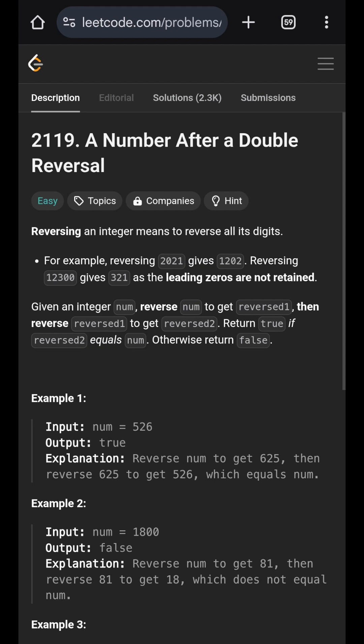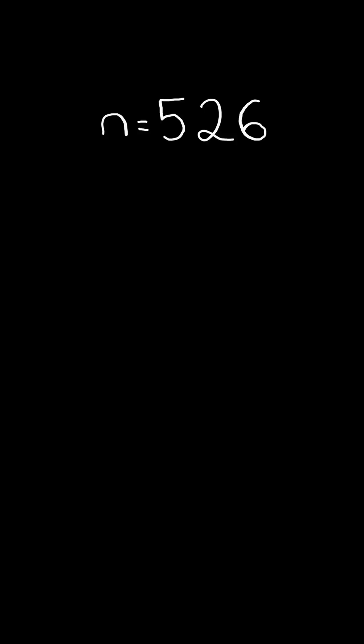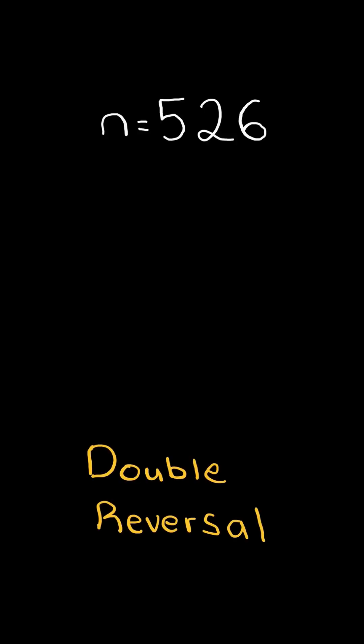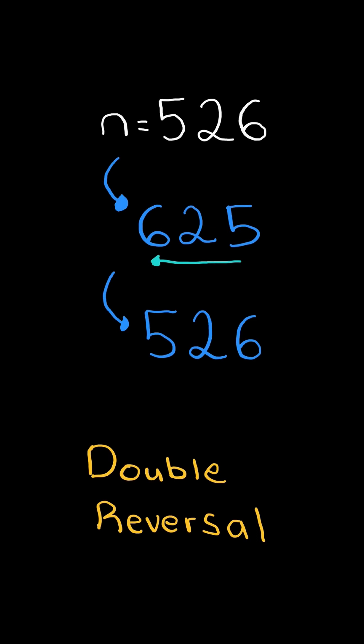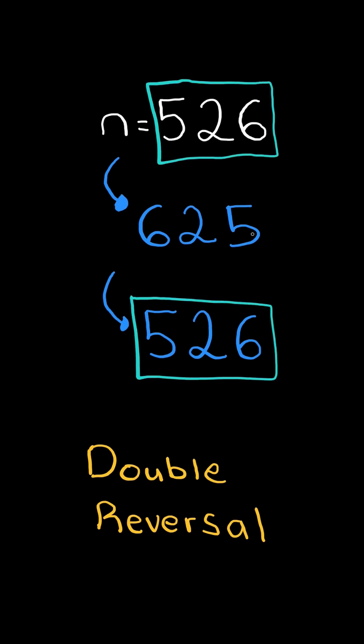A number after a double reversal. Given an integer n, perform a double reversal: reverse all the digits in n to get a new number, then reverse the new number again. If the double reversal equals the original number, we return true.